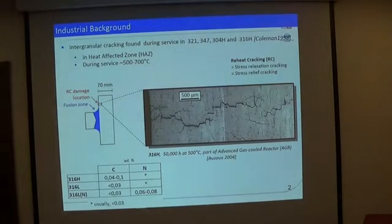So what is the industrial problem we are looking at? It's reheat cracking, also called stress relaxation cracking, or stress relief cracking. This is found in these kind of stainless steels during service of power plants, typically in the heat affected zone of a weld. So you're close to a welded joint here, and in service you see such kind of cracks. Okay, so that's an industrial problem.